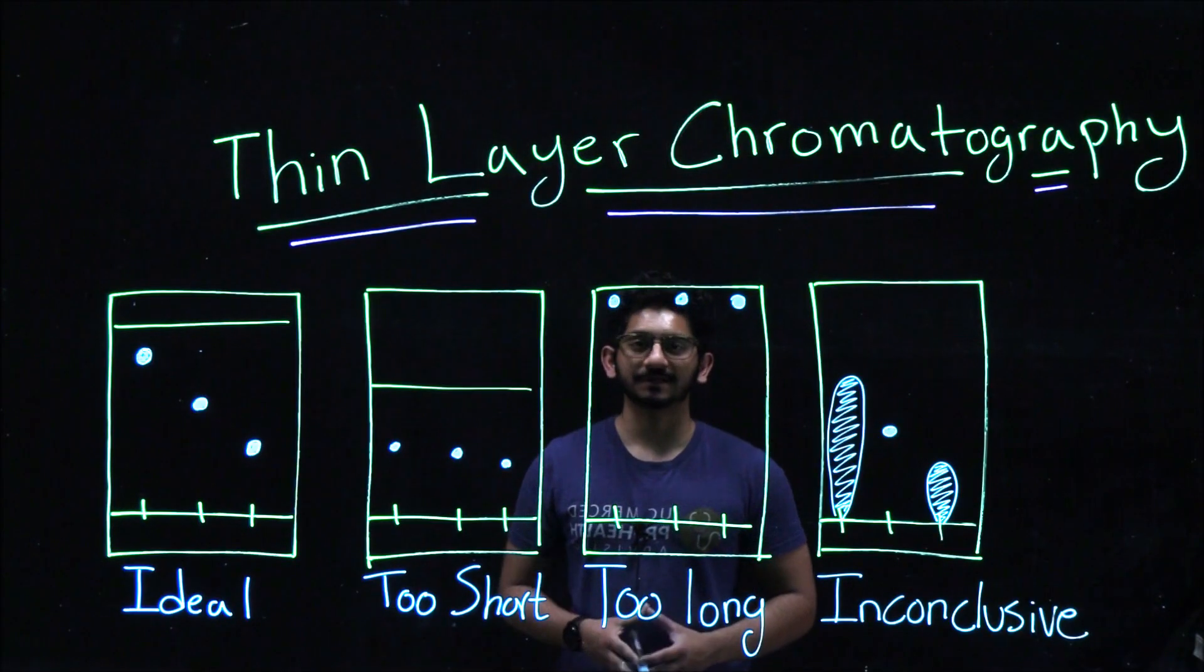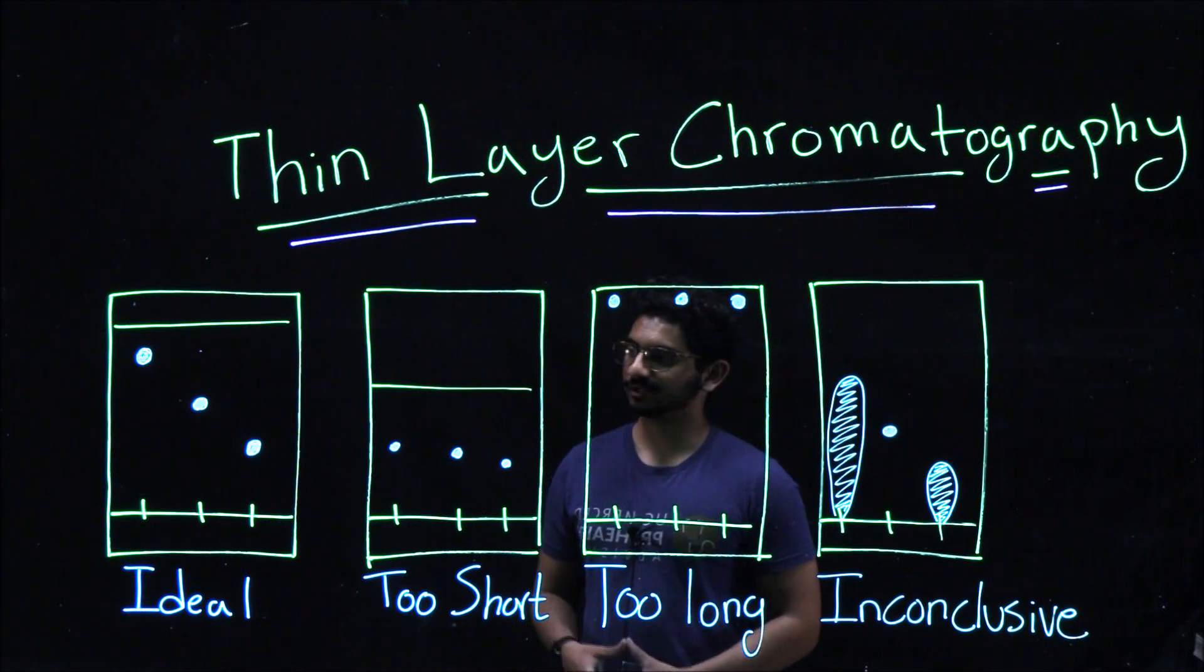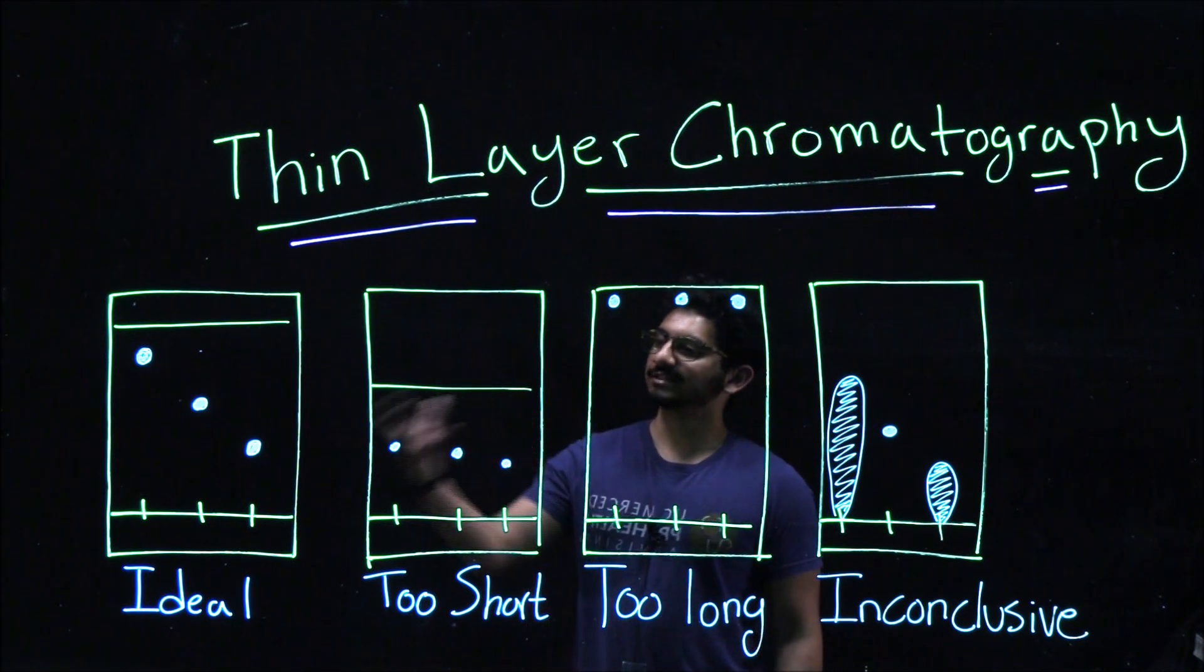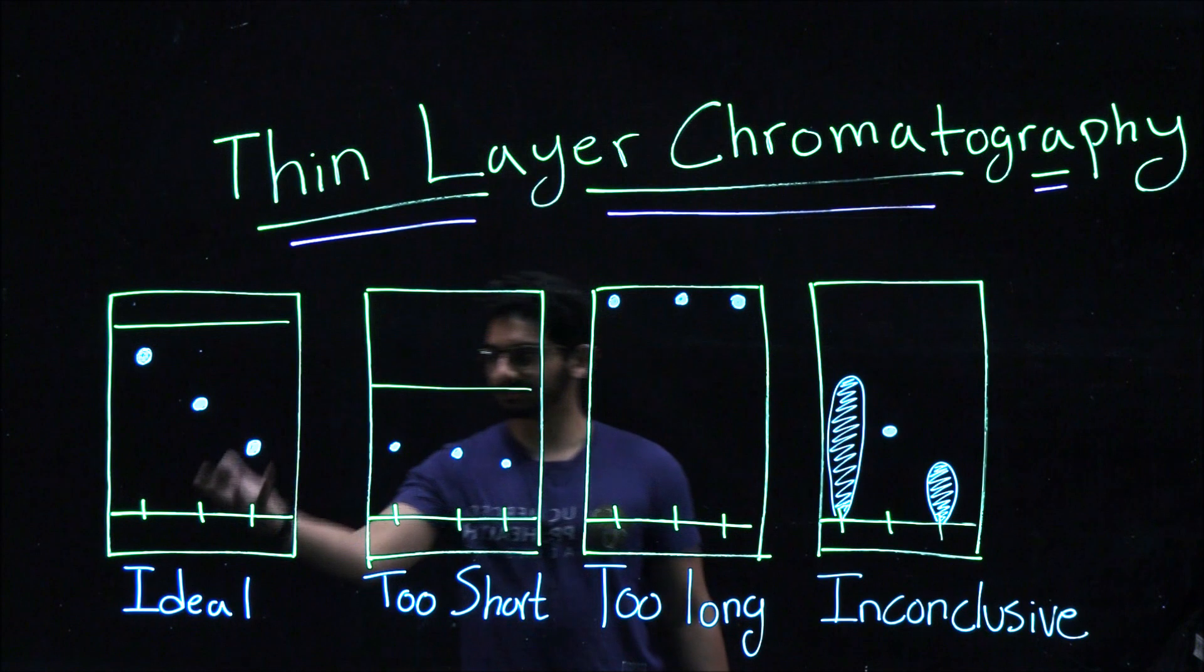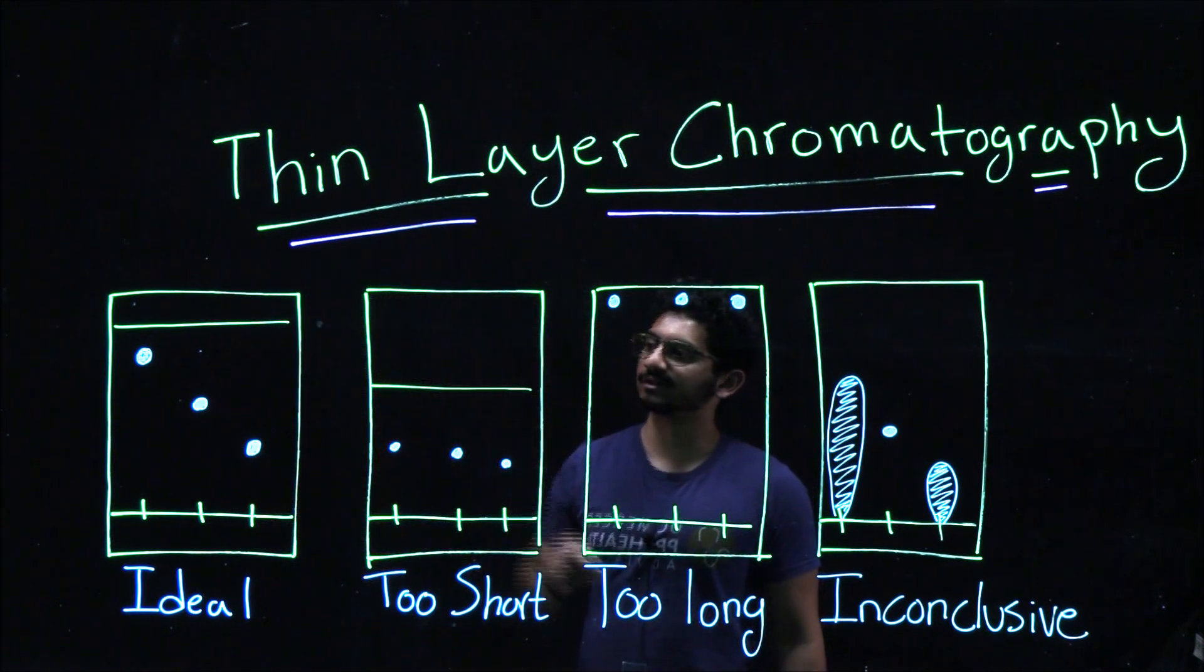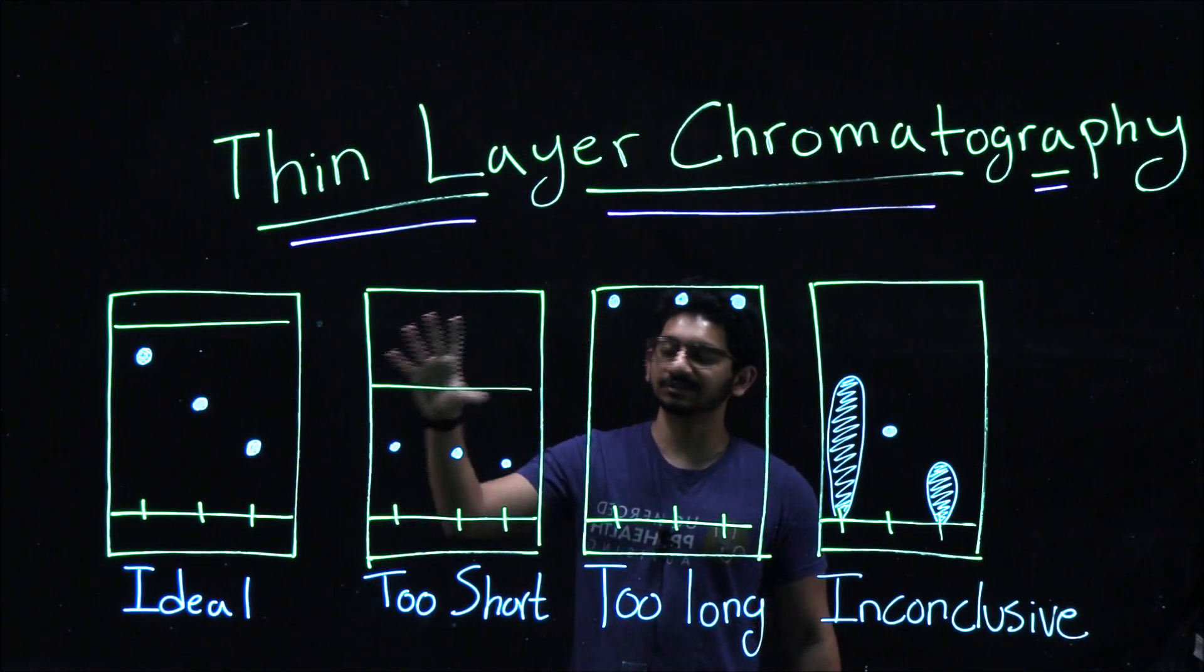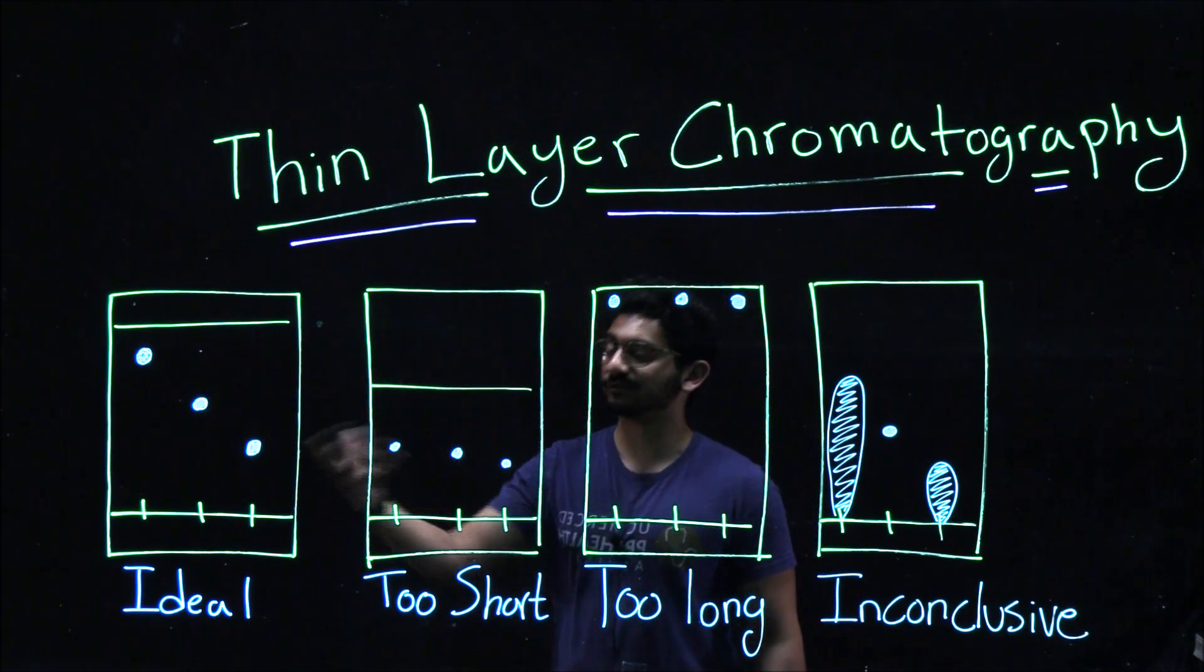Your TLC plate can look very different depending on how you actually develop it, visualize it, and stuff like that. Ideally, we would want our TLC plate to look like this, where we have our solvent front one centimeter above the top, and our compounds with a very nice, clear separation between all three with different RF values.